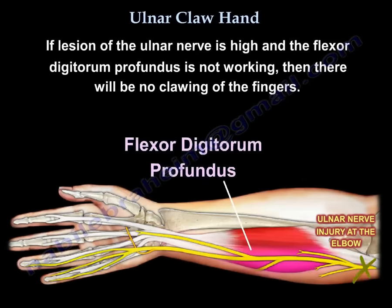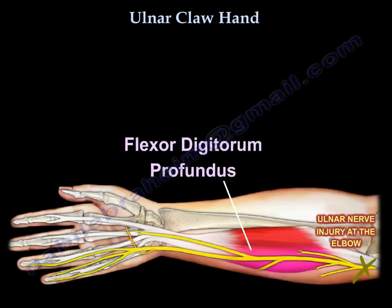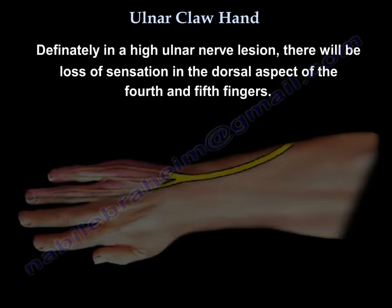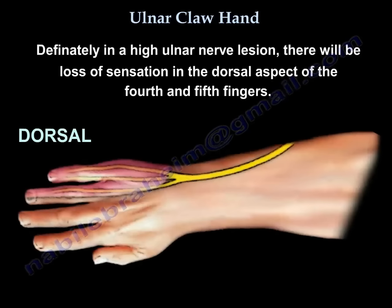Now, if the lesion of the ulnar nerve is high and the flexor digitorum profundus is not working, then there will be no clawing. And in a high lesion, you will have loss of sensation in the dorsal aspect of fingers four and five.